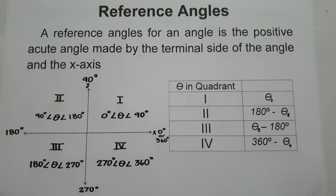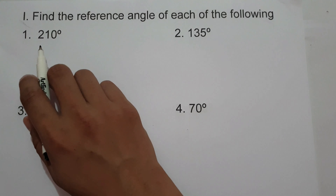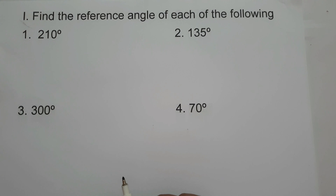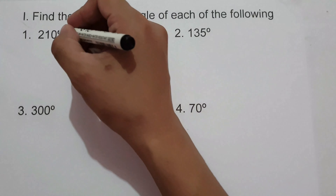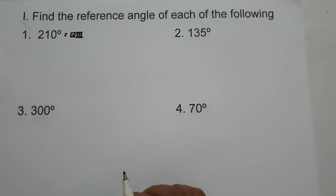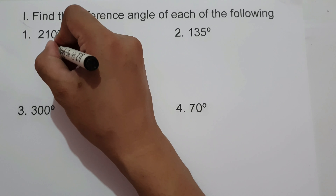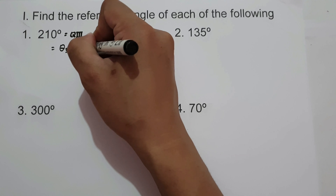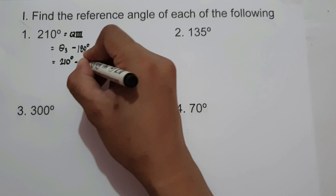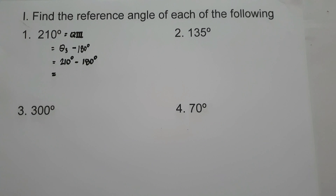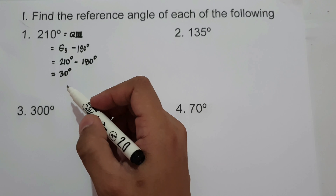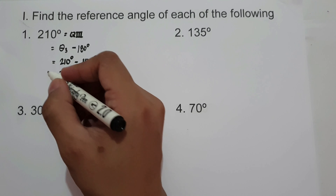Let's start with an example. On the first set of examples, we have 210°. How do we find the reference angle of 210°? First, let us find the location of 210°. It is located in quadrant 3 — between 180° and 270°. The reference angle in quadrant 3 is the given angle minus 180°. So we have 210° minus 180°, which is 30°. Therefore, the reference angle of 210° is 30°.